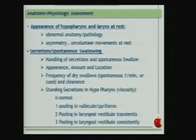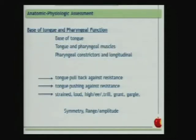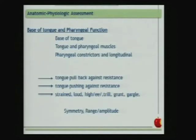If secretions are standing in the hypopharynx, we score: zero for normal position, one for pooling in the valleculae or piriform sinuses, two for pooling in the vestibule transiently, and three for pooling in the laryngeal vestibule consistently. We then assess the base of tongue and pharyngeal function — tonicity, back movement, and pharyngeal muscles — through tongue resistance exercises, strained loud high voices, and trills, assessing symmetry, range, and amplitude.